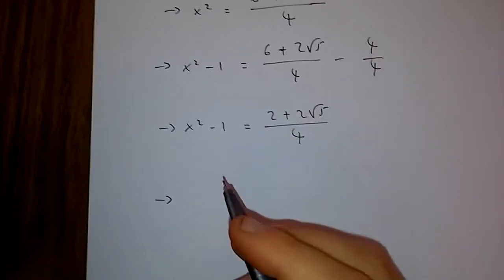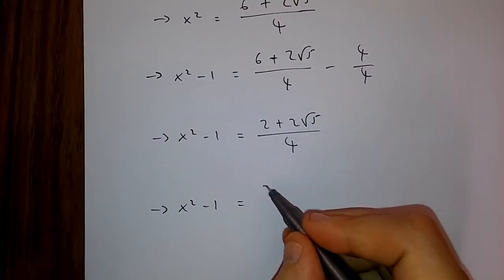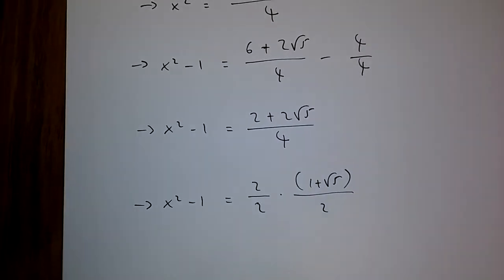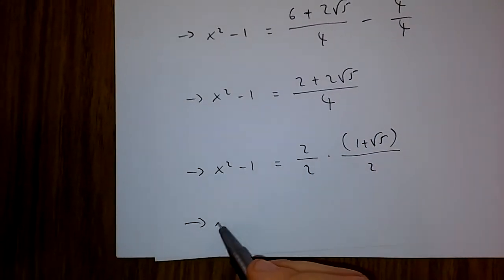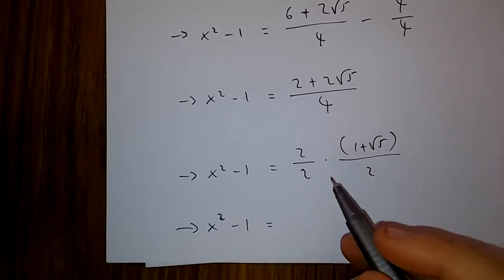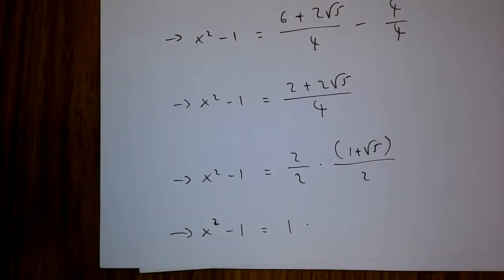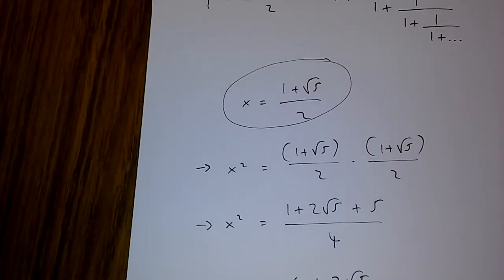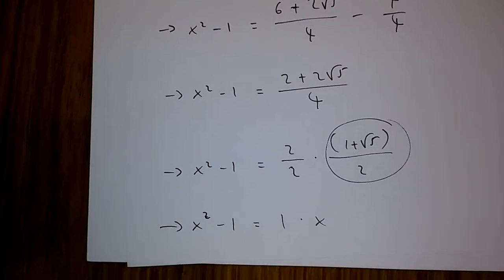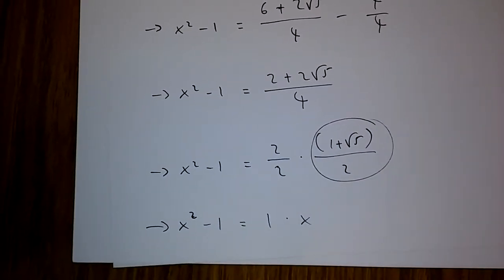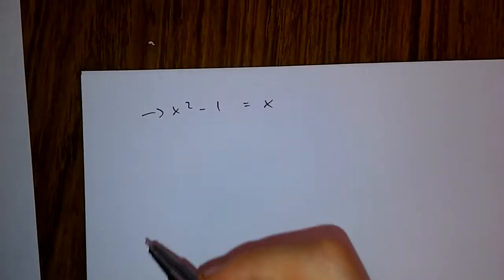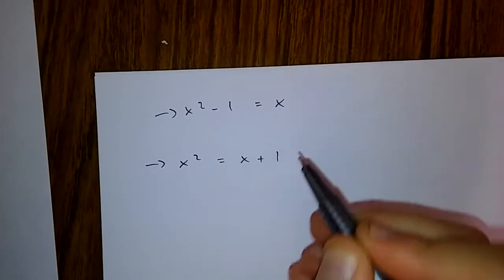Now this can be transformed into x squared minus 1 is equal to 2 over 2, times 1 plus root 5 over 2. And since 2 over 2 is equal to 1, we get 1 times this value over here, which is x as we said in the beginning of this video. So I now have x squared minus 1 is equal to x. If x squared minus 1 is equal to x, then x squared is equal to x plus 1.